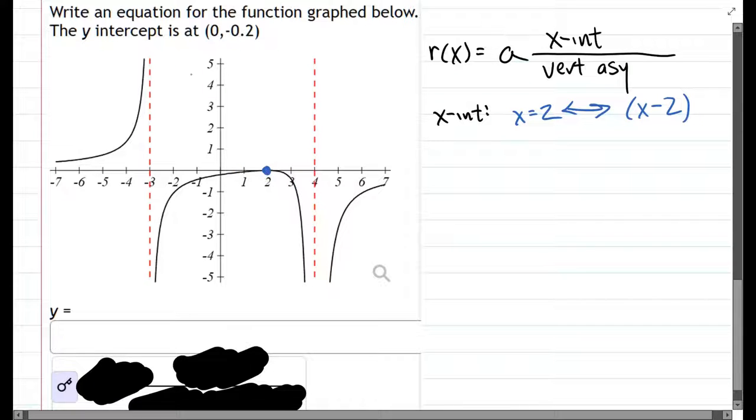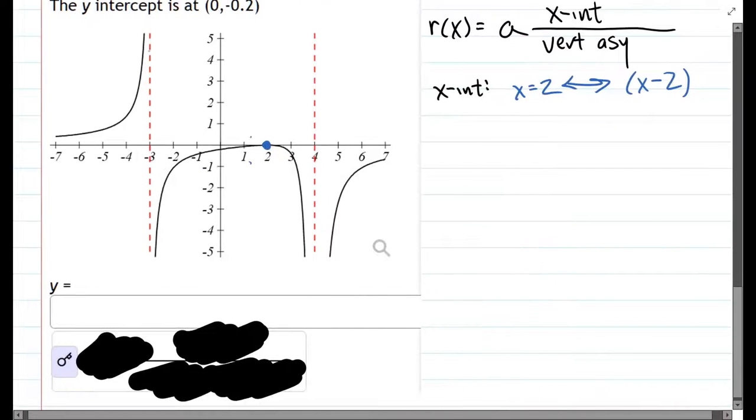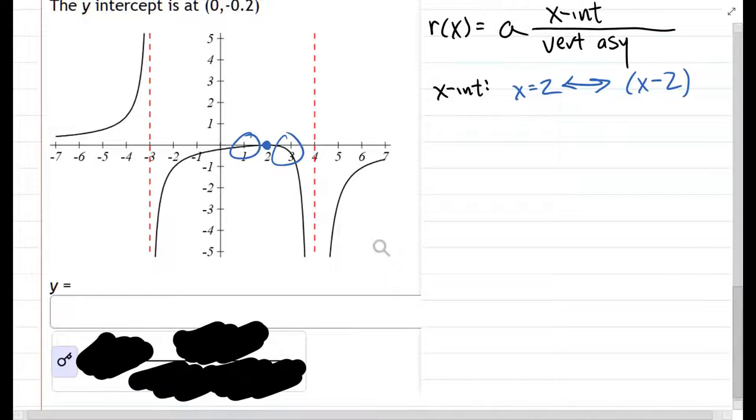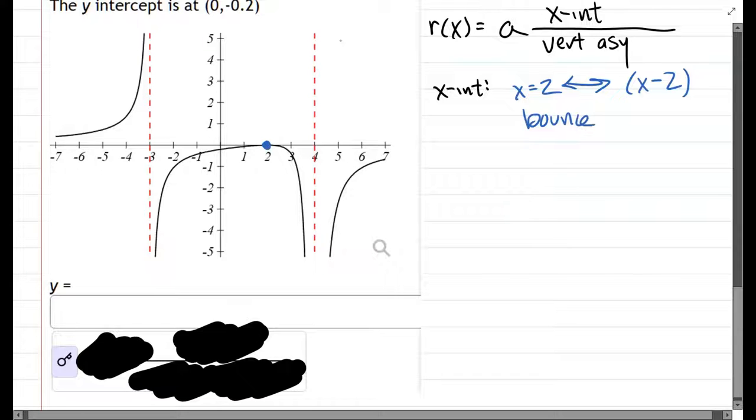A cross x-intercept would look like it would have gone from negative to positive or from positive to negative. This one started out negative and stayed negative, so this is going to be a bounce intercept which means our multiplicity is even.